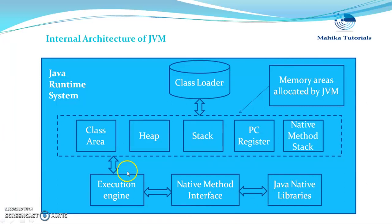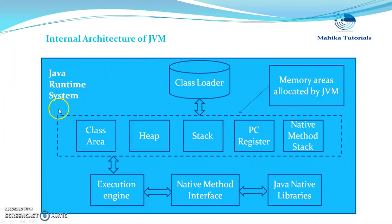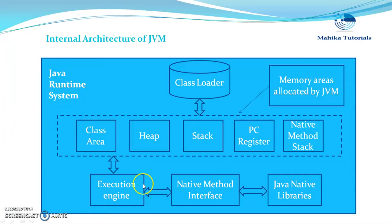So this is how allocation of memory takes place for our code with the help of the class loader. These are the different memory areas which will be used by JVM. And this is the execution engine which executes the code that resides in the memory.